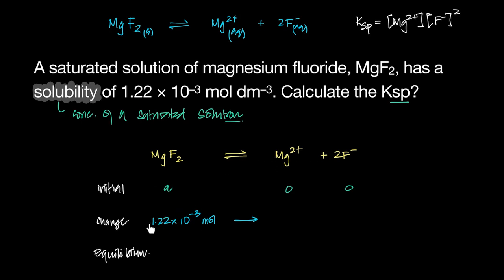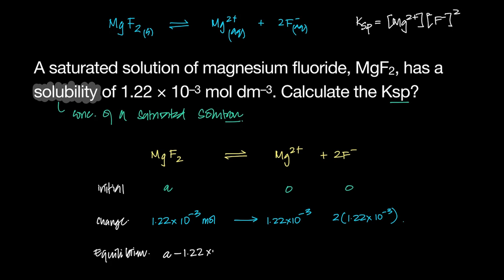If this many moles of magnesium fluoride are dissolving, how many moles of magnesium and fluoride ions do they make? It makes the same amount of magnesium ions — the ratio is 1:1 for magnesium — but it makes twice as many fluoride ions. So at equilibrium, MgF₂ remaining is A minus 1.22×10⁻³, Mg²⁺ is 1.22×10⁻³, and F⁻ is 2×1.22 = 2.44×10⁻³.